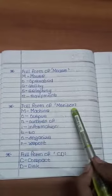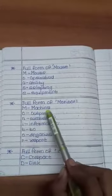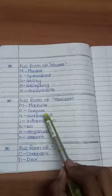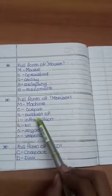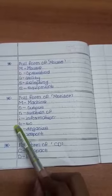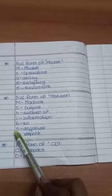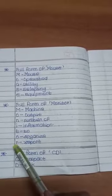Full form of monitor. M means machine, O means output, N means number of, I means information, T means to, O means organize, R means report.